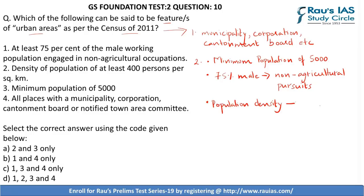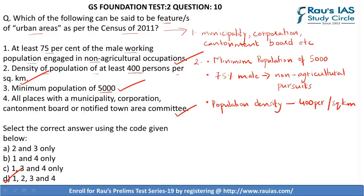The first statement — at least 75% of the male working population engaged in non-agricultural occupations — is correct. Second — density of population of at least 400 persons per square kilometer — is also correct. Third — minimum population of 5,000. And lastly — all places with a municipality, corporation, cantonment board, or notified town area committee — is also correct. Hence, the right answer is D — 1, 2, 3, and 4 only.